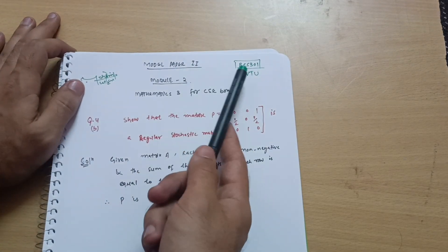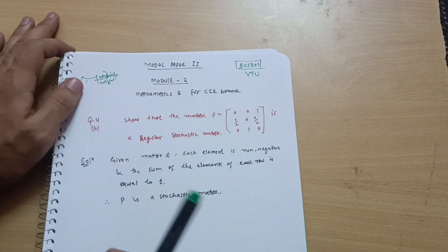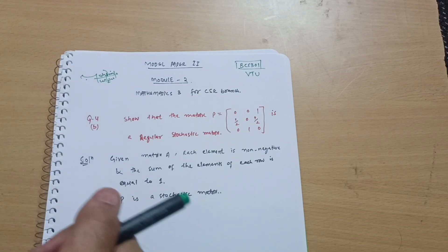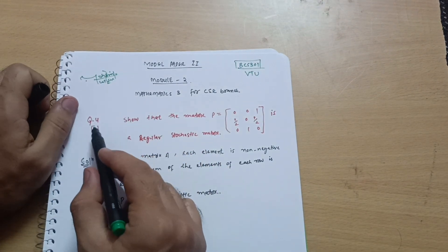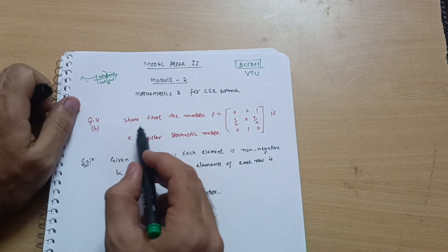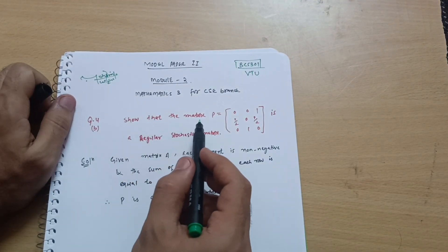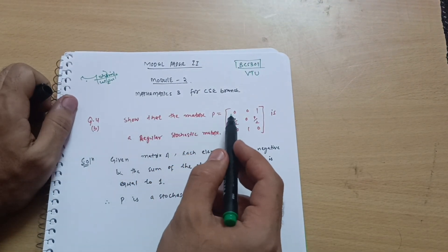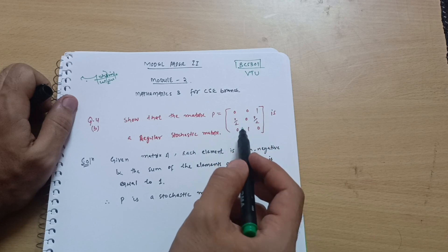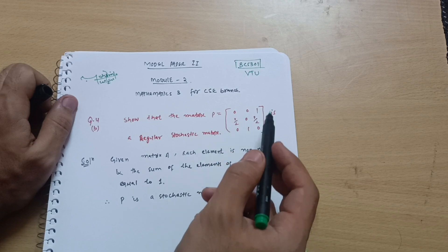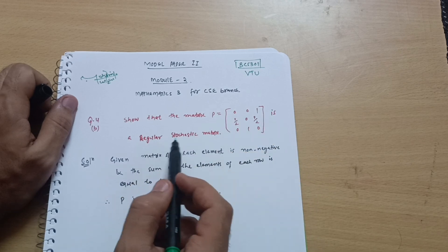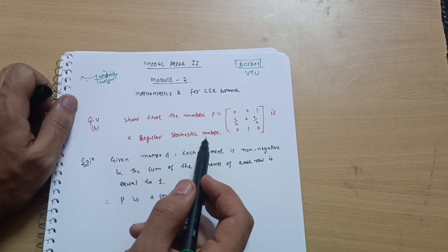The subject code is BCS301. Today we will discuss question number 4B: show that the matrix P = [[0, 0, 1], [1/2, 0, 1/2], [0, 1, 0]] is a regular stochastic matrix.